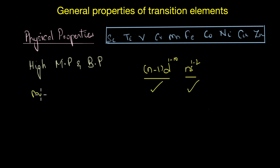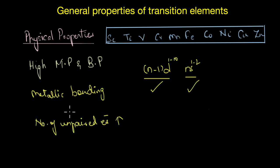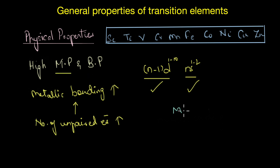Since these elements form metallic bonding, greater the number of unpaired electrons, stronger is the interatomic interaction and stronger is the metallic bonding. As a result we need to provide more energy to break their lattice structure, and this is why transition metals have high melting points. In general, the melting point reaches a maximum at the middle of each series, indicating that one unpaired electron per d orbital is especially favorable for strong interatomic interaction.